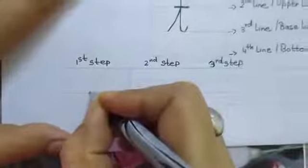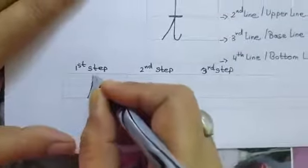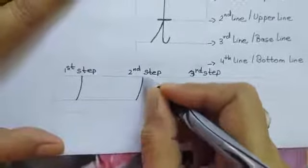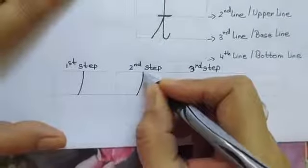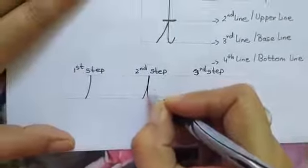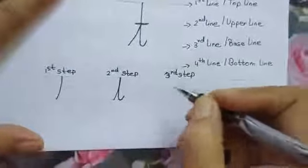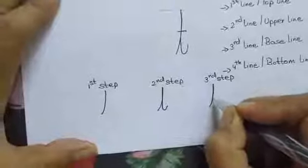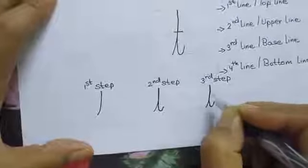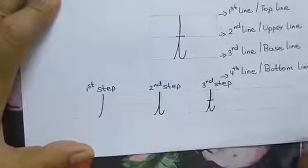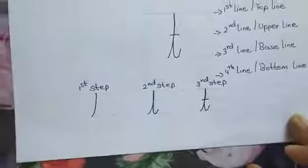Start from the third line, go up to the first line. Then come down straight to the third line and finish a little above the third line. And a short sleeping line in the middle. So children, this is how we write small cursive T.